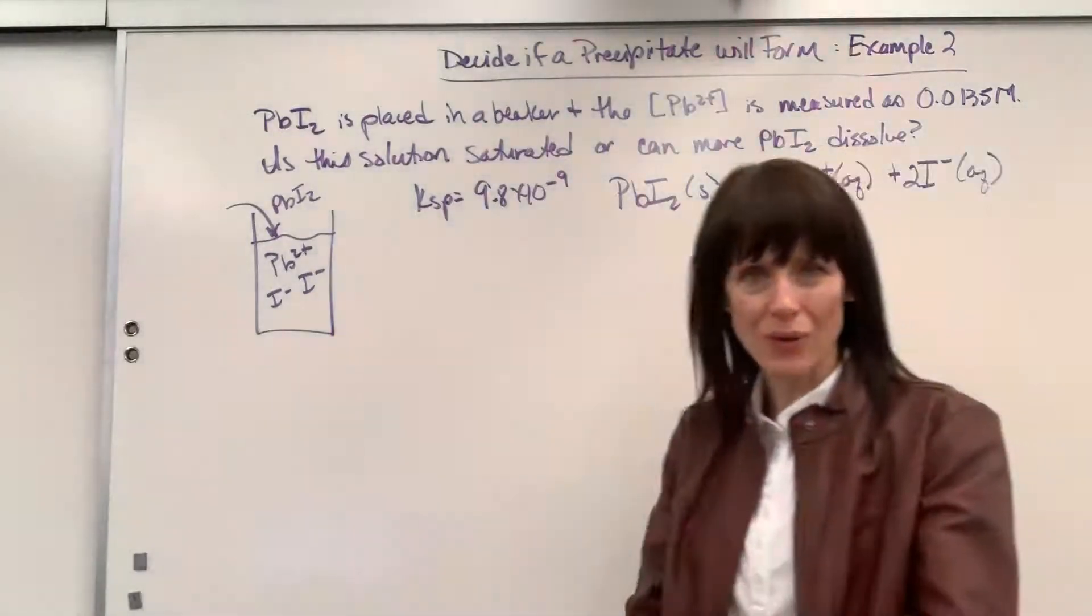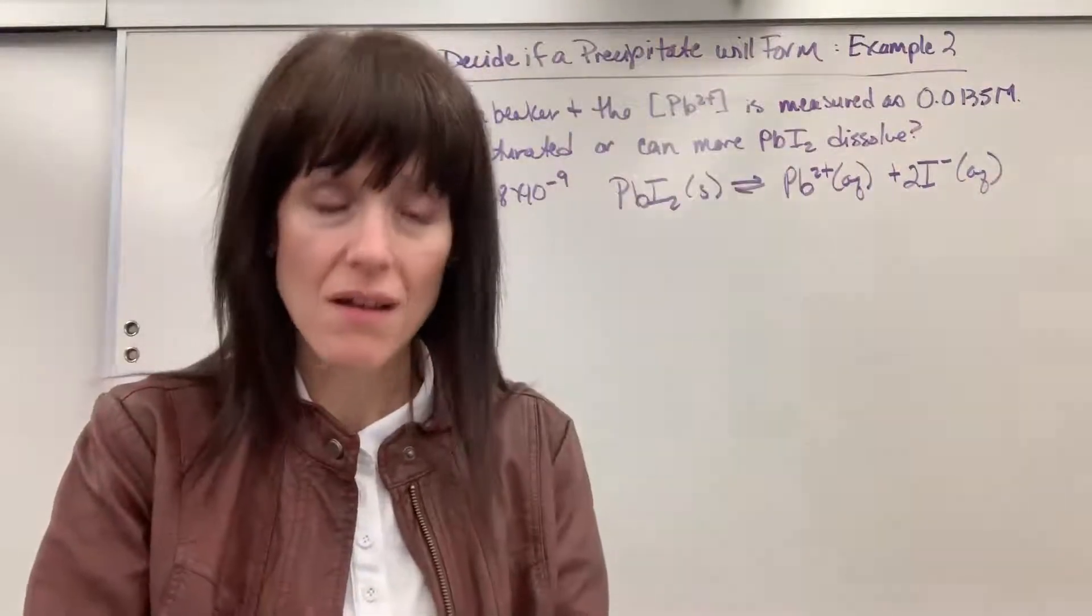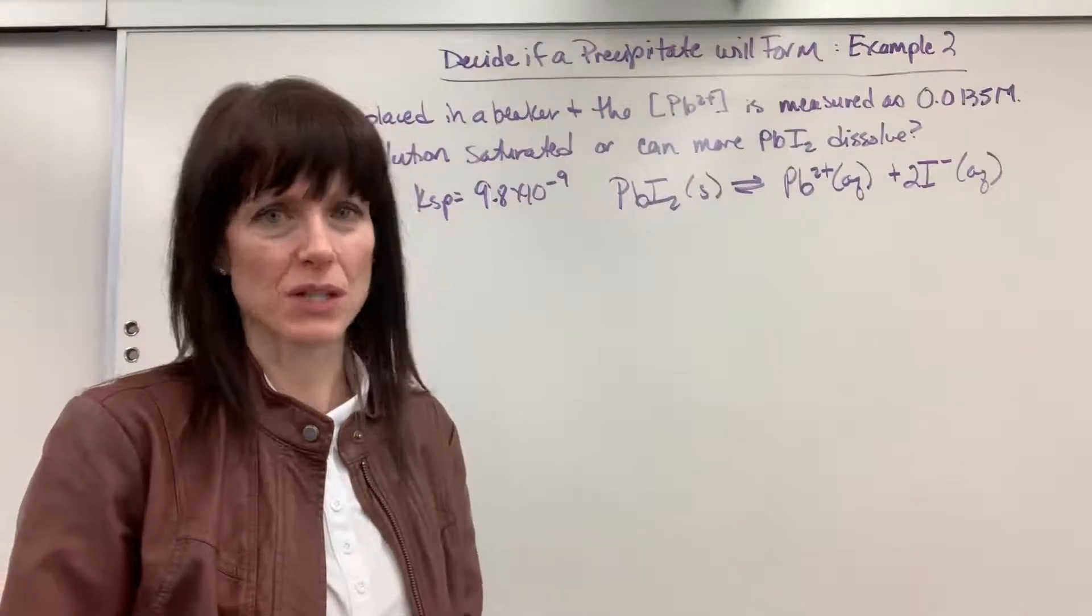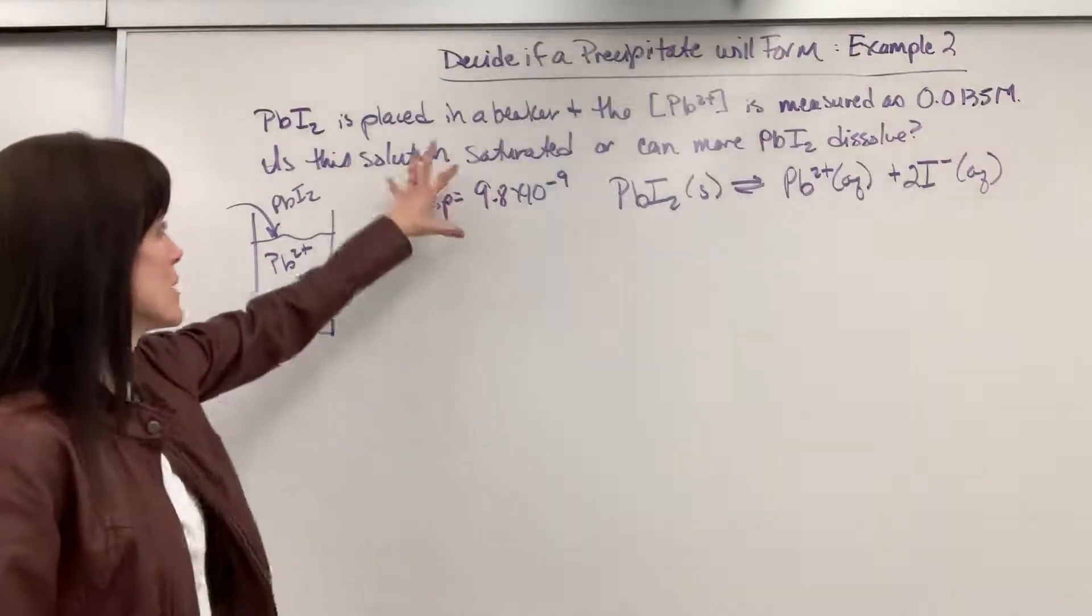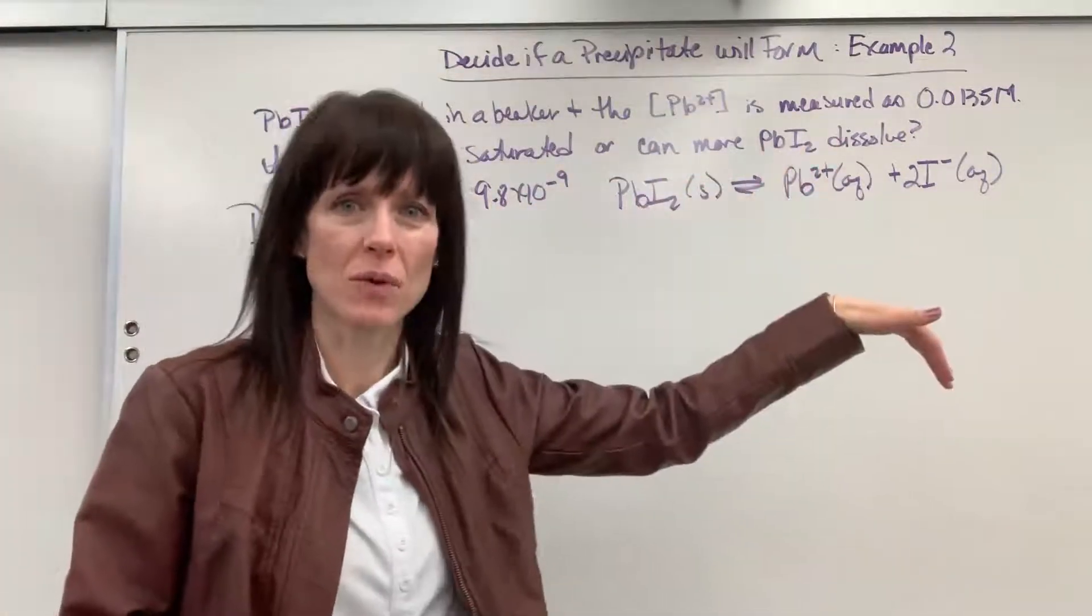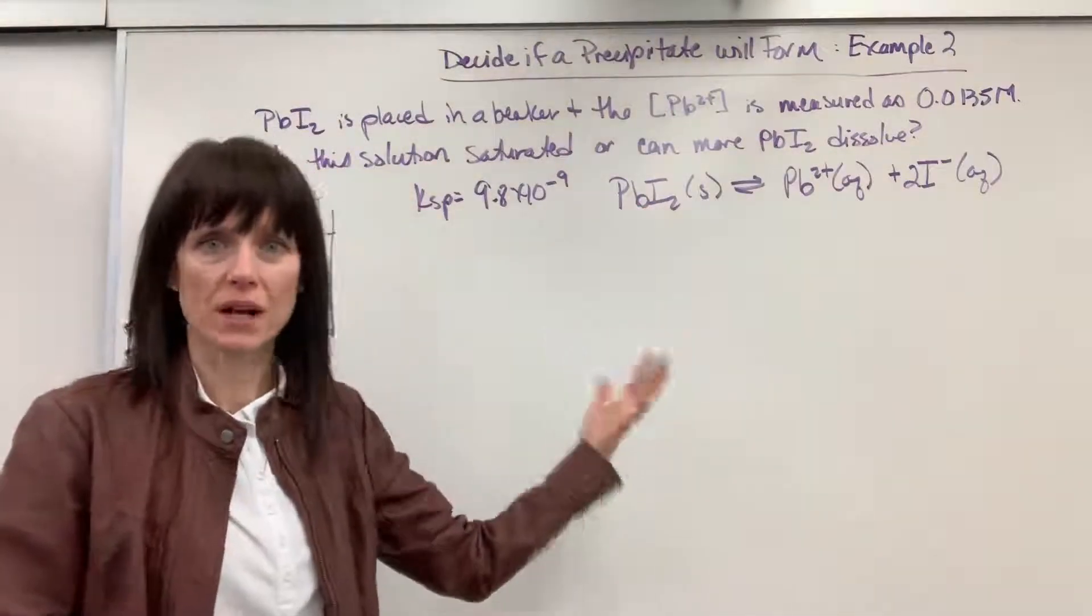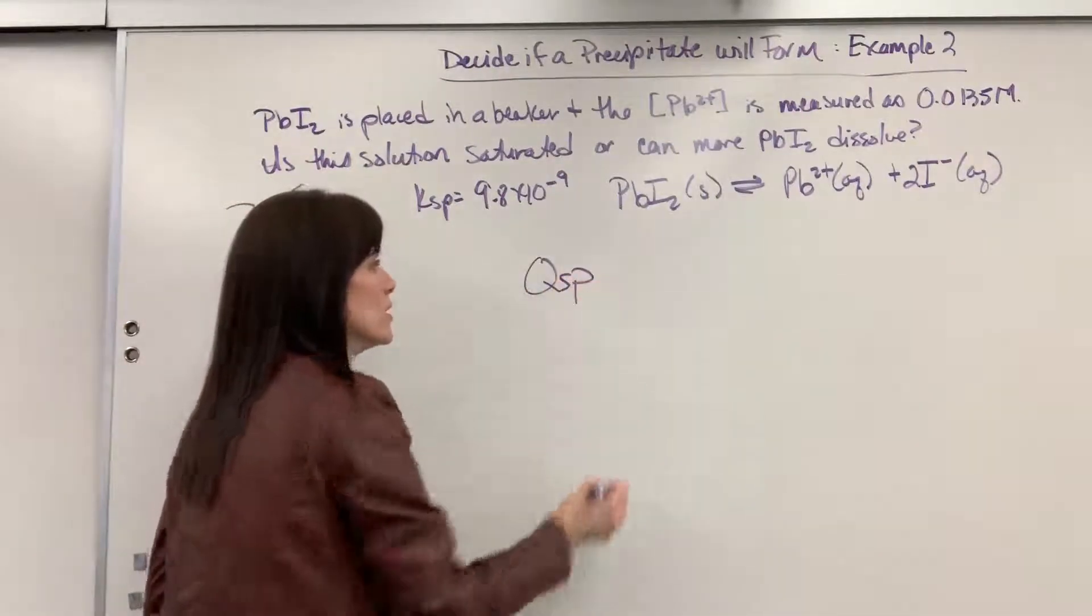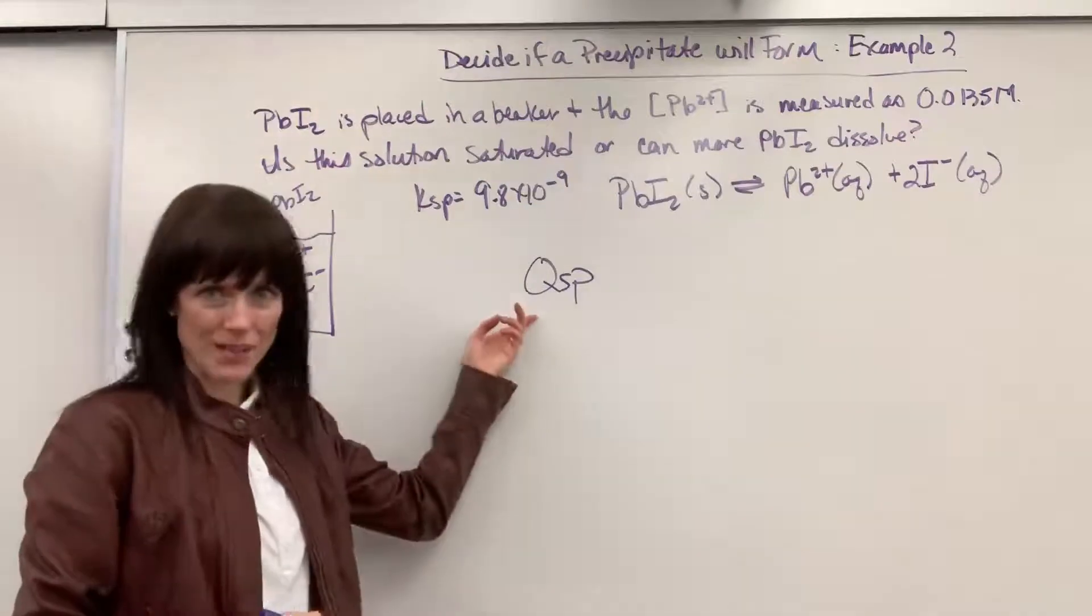So we're going to have the lead iodide and two moles of the iodide right there. We want to know, is this at equilibrium, which means it's saturated, or can we dissolve more? Or could it be past saturation? We'll talk about that. So really what they're asking is, hey, we got this number at this particular moment. How does that compare to KSP? Are we saturated? Are we at equilibrium? So really what we're looking for is at a moment, what's the ratio of products to reactants? And that is called QSP.